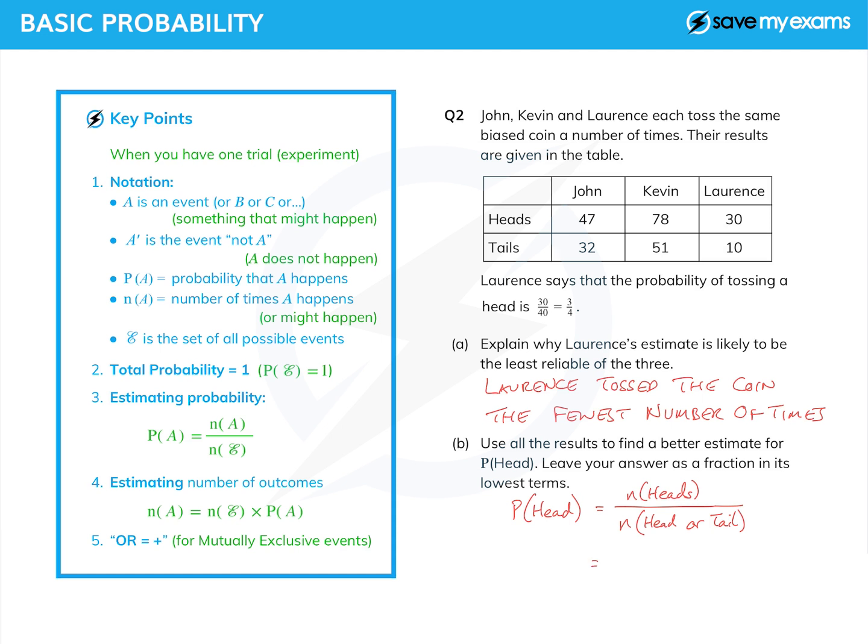The number of heads is 47 plus 78 plus 30. And we divide that by 47 plus 78 plus 30, because that's the number of heads, plus 32 plus 51 plus 10. And that gives me 155 over 248.